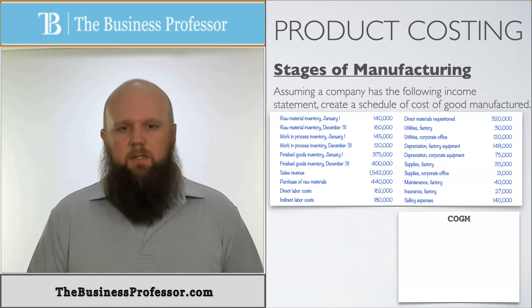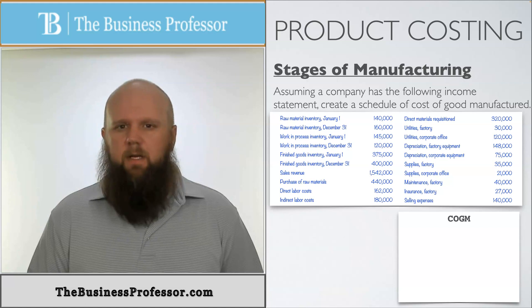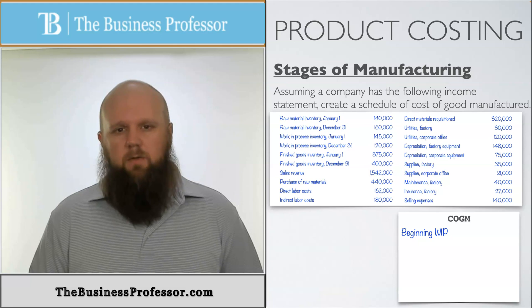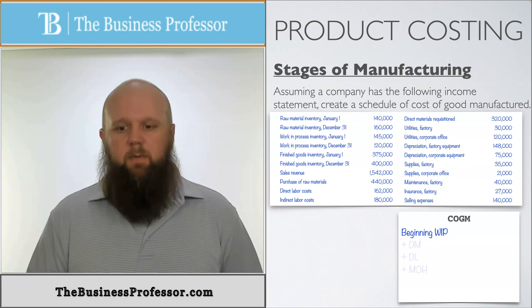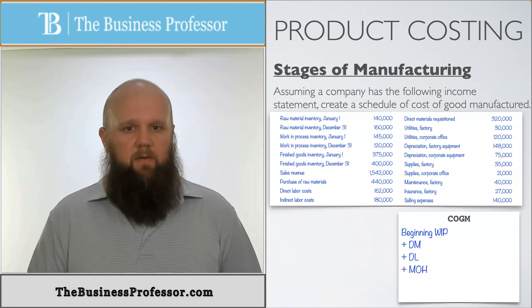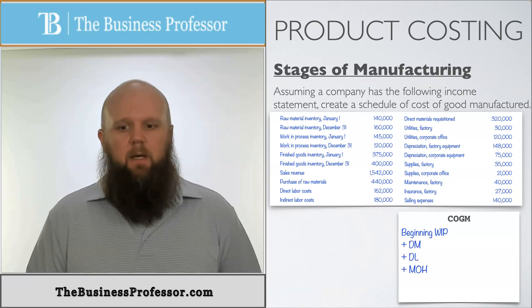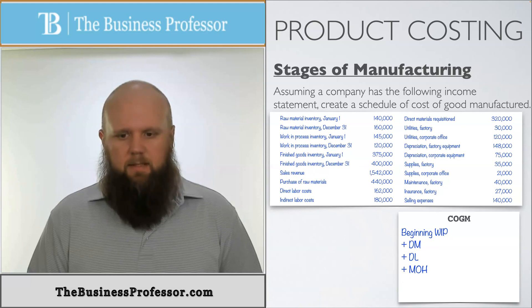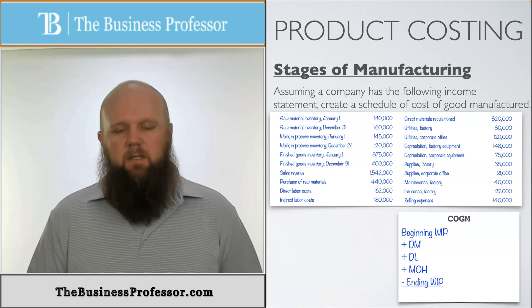To find this, we use the equation: beginning work in process plus all the inputs that go into work in process — which are direct material, direct labor, and manufacturing overhead — minus the ending work in process. That gives us our cost of goods manufactured.